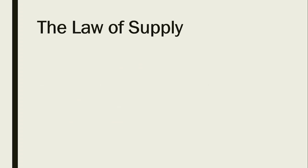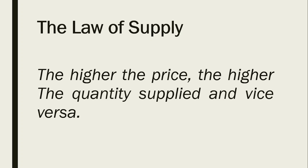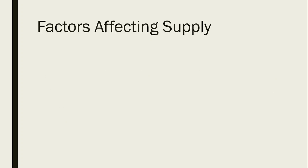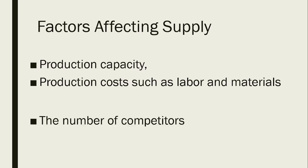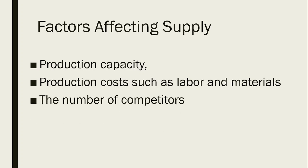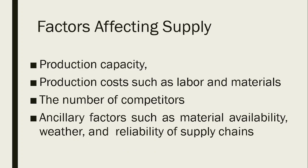What is the law of supply? The higher the price, the higher the quantity supplied, and vice versa. Factors affecting supply: One, production capacity. Second, production costs such as labor and materials. Third, the number of competitors. Fourth, ancillary factors such as material availability, weather, and reliability of supply chains.